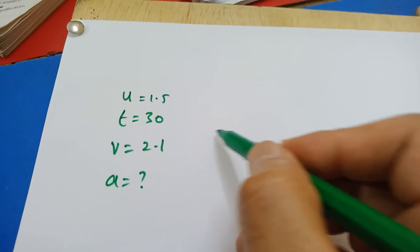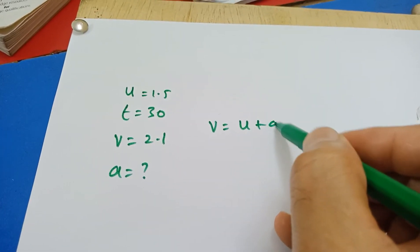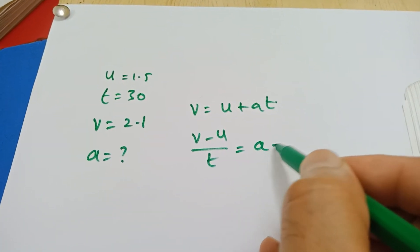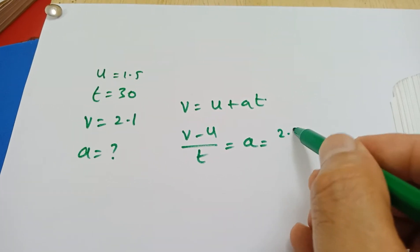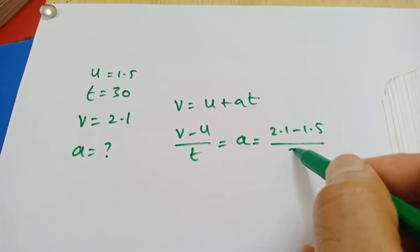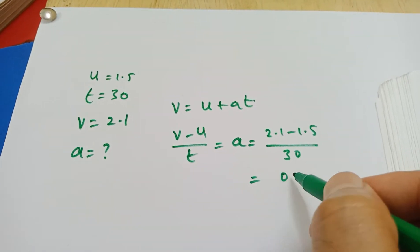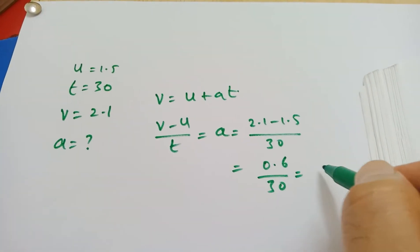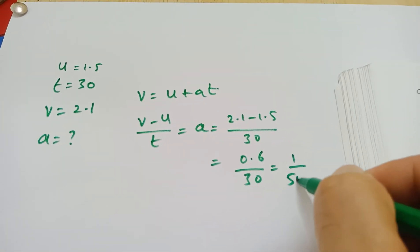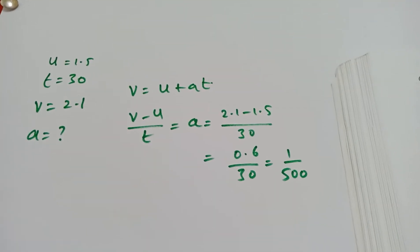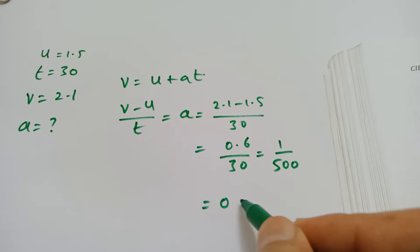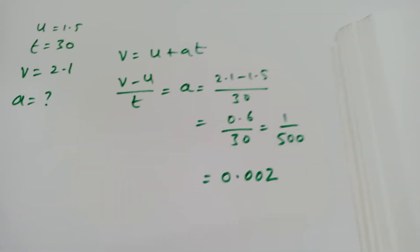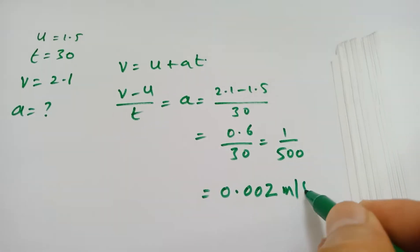To find the acceleration I use the equation v = u + at, which rearranges to a = (v − u) / t. That gives (2.1 − 1.5) / 30 = 0.6 / 30, which equals 0.02 metres per second squared — or 1/50. So the acceleration for the first 30 seconds is 0.02 m/s².